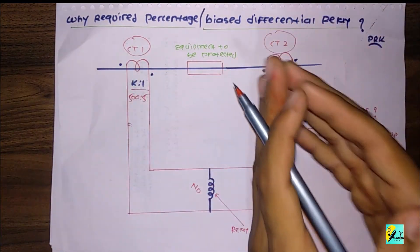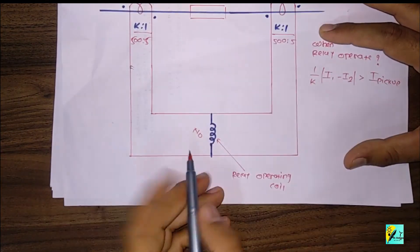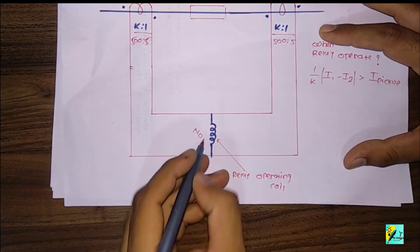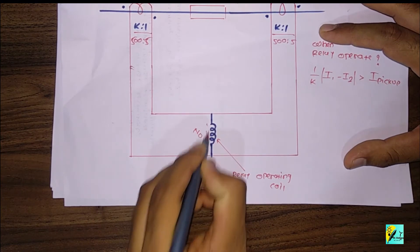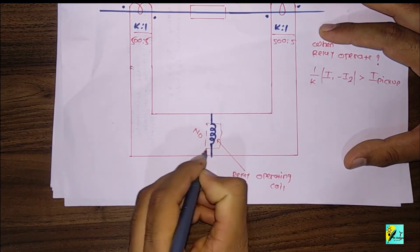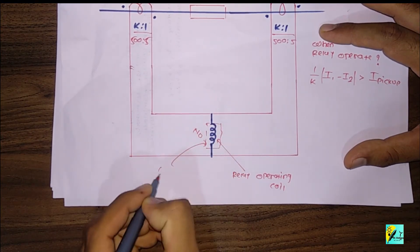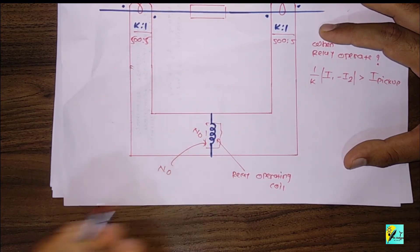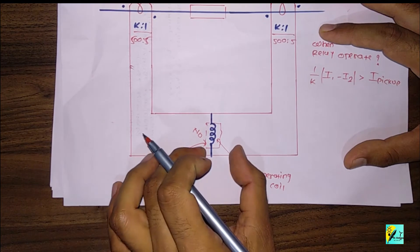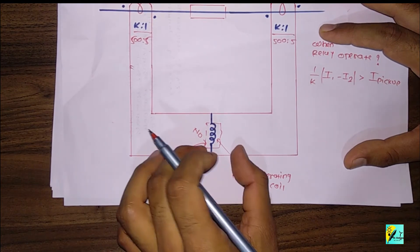This is the relay operating coil, and the number of turns is N0. This is the relay operating coil that responds to whatever fault condition exists.